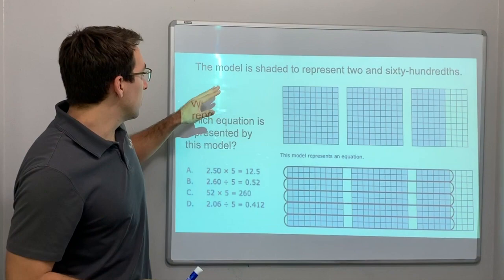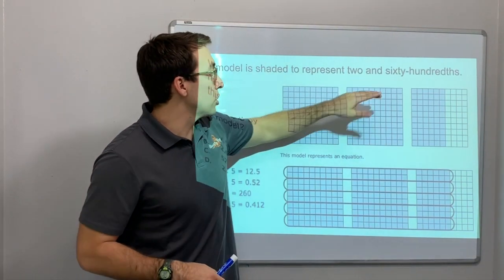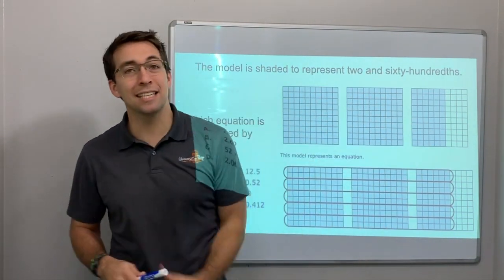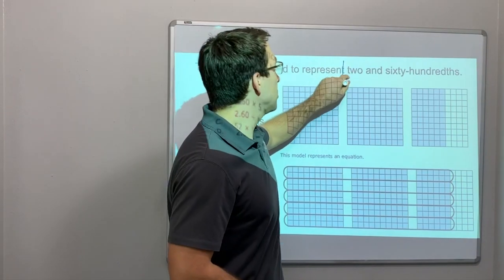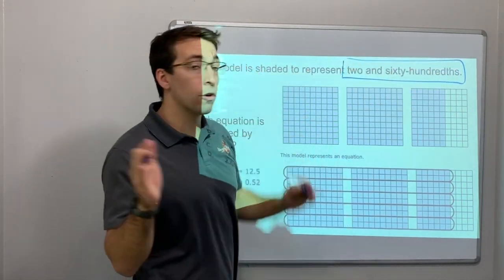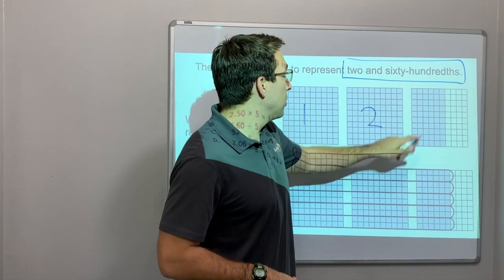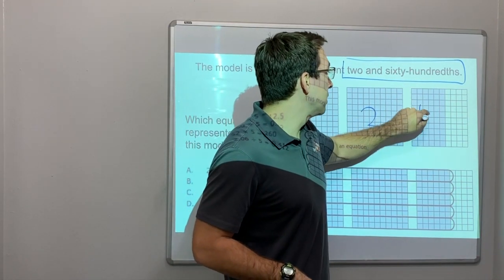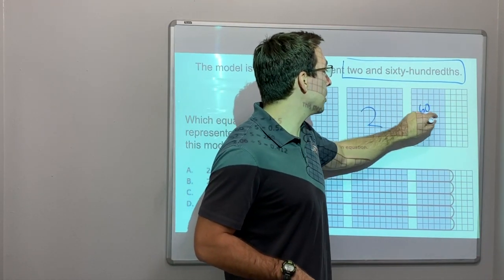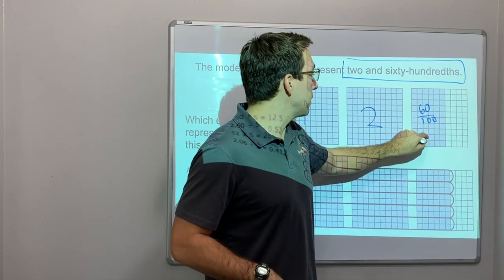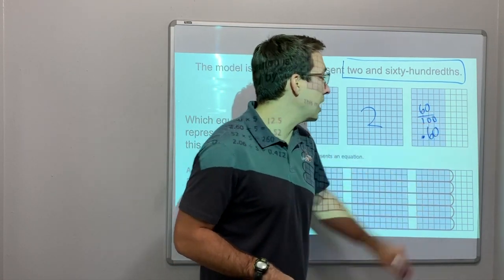One thing that we need to know is that the model is shaded to represent 2 and 60 hundredths. So they gave us a number in word form. So this is 1, 2, 60 hundredths, 60 out of 100, or like we deal with decimals, 60 hundredths.